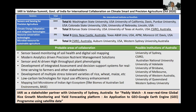The sessions were very well attended with six universities participating and quite a few participants from Australia. Programs are being developed in the areas of sensor-based monitoring of soil health, digital soil mapping, modern analytics-driven precision nutrient management solutions, sensor and artificial intelligence-driven high-throughput plant phenotyping, development of integrated assessment and decision support systems for real-time service to farmers and stakeholders, development of multiple stress-tolerant varieties of rice, wheat and maize, low-carbon technologies for improved efficiency, and mapping soil microbiome and Indian agri-ecosystems. For each of these subject areas, partners from the Indian diaspora have been identified.